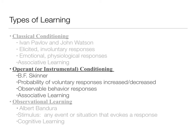We've already talked about classical conditioning; today we're going to talk about operant conditioning. This is primarily brought about by B.F. Skinner. What operant conditioning is saying is that the probability of a voluntary response — remember in classical conditioning we were talking about involuntary responses, things that just naturally happened — our voluntary responses are increased or decreased by their association with a consequence. In classical conditioning, our involuntary responses are being paired with a neutral stimulus that then becomes a conditioned stimulus producing a conditioned response.